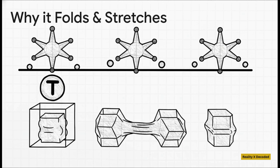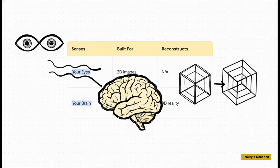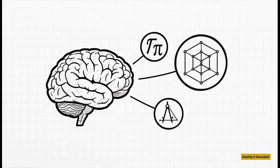Our 3D space just can't contain the full 4D shape all at once. So as the real tesseract moves or rotates up in the 4th dimension, its 3D shadow down here in our world has to constantly warp and stretch and reconfigure itself just to keep up. And to really get why this is so hard to picture, consider our own built-in limitations. Your eyes don't actually see in 3D — they just see two flat 2D images. It's your brain that does all the heavy lifting, stitching those two flat pictures together to create the 3D world you experience every day. Our brains are hardwired for three dimensions, and that's the limit of our natural perception. So to understand anything beyond 3D, we have to turn to different tools, like the abstract languages of math and geometry, and by studying these strange 3D projections — these shadows.